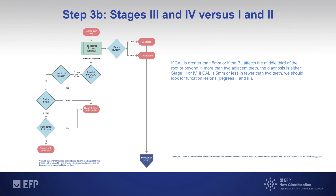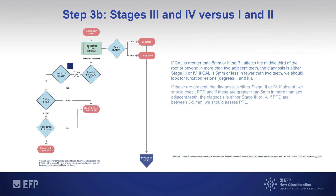If clinical attachment loss is five millimeters or less in fewer than two teeth, we should look at the furcation lesions degrees two and three. If these are present, the diagnosis is either stage three or four.